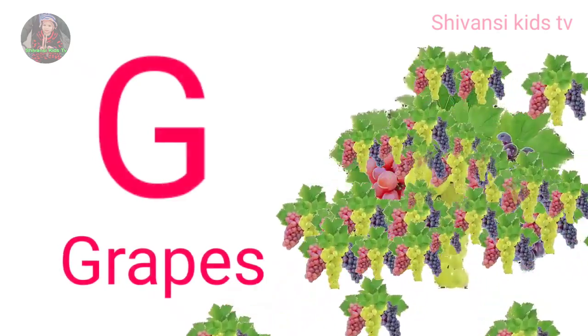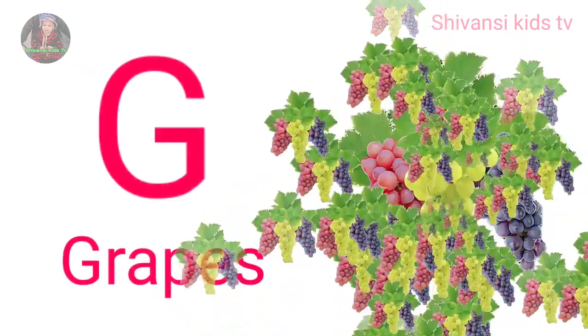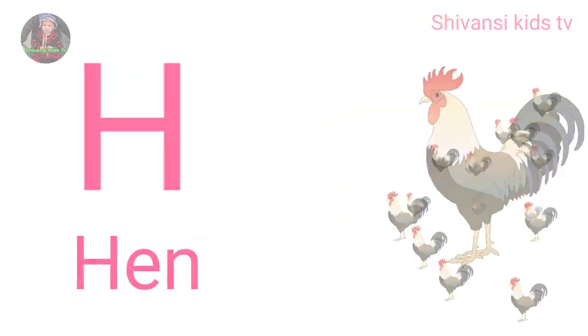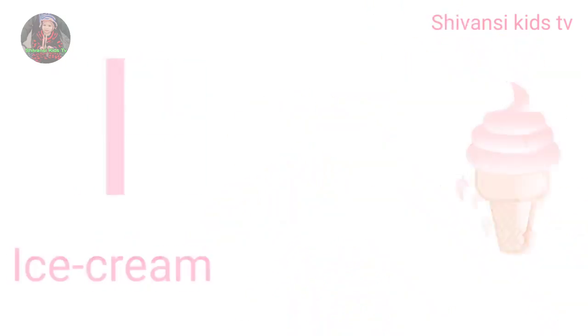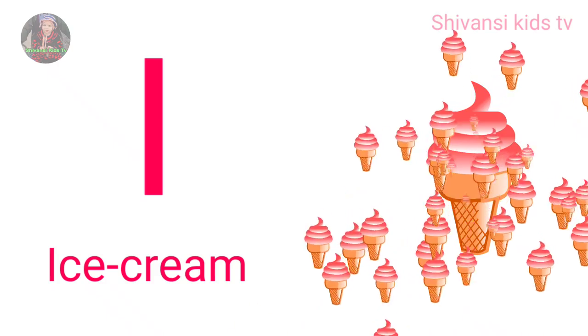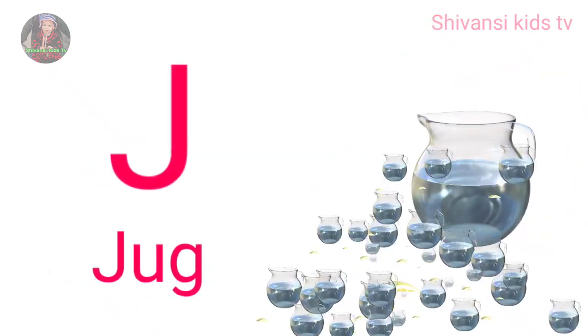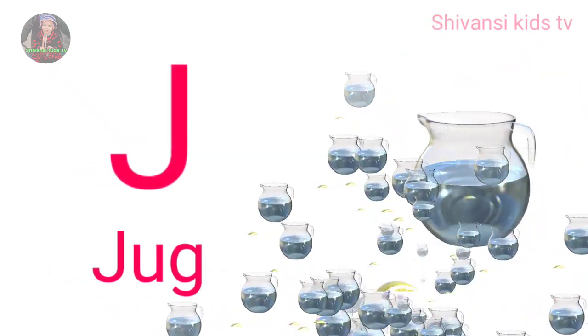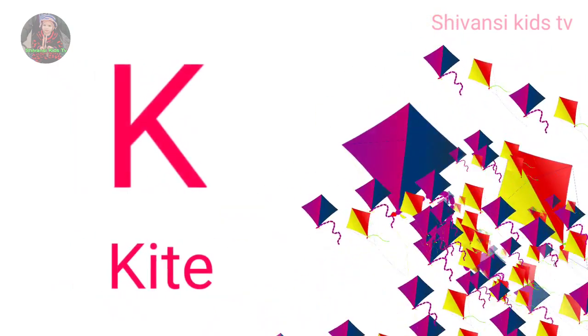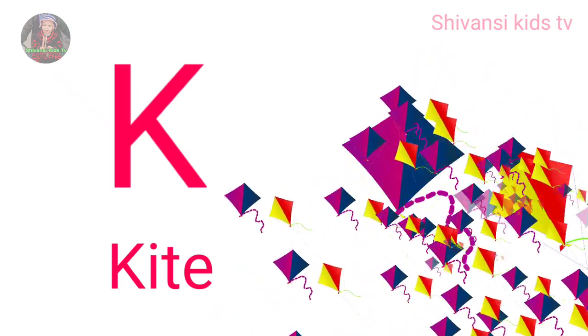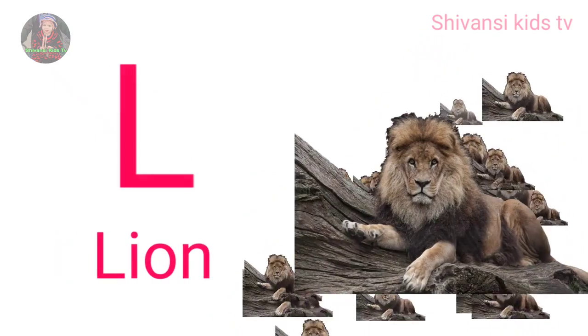G for grapes, H for hand, I for ice cream, J for jug, K for kite, L for lion.